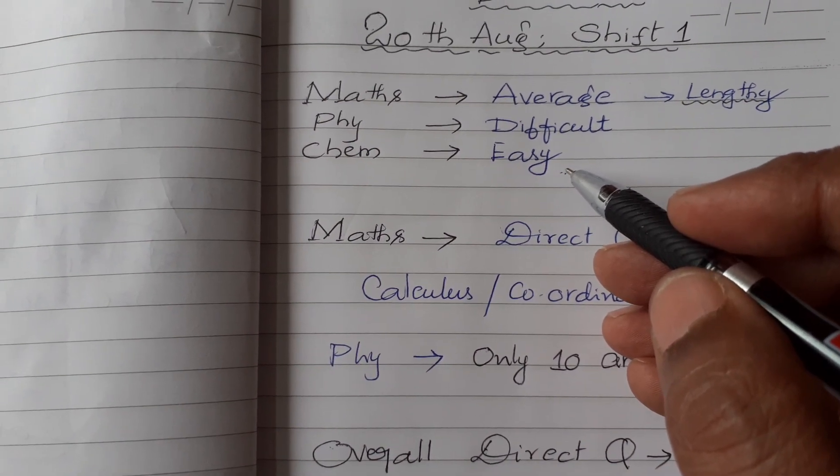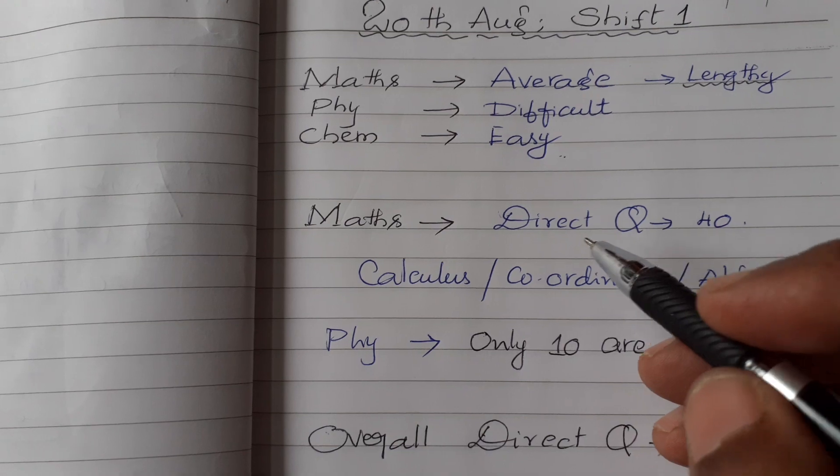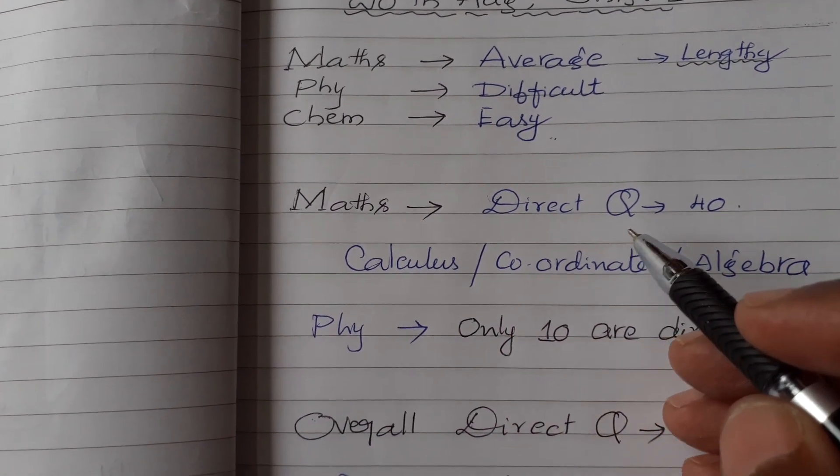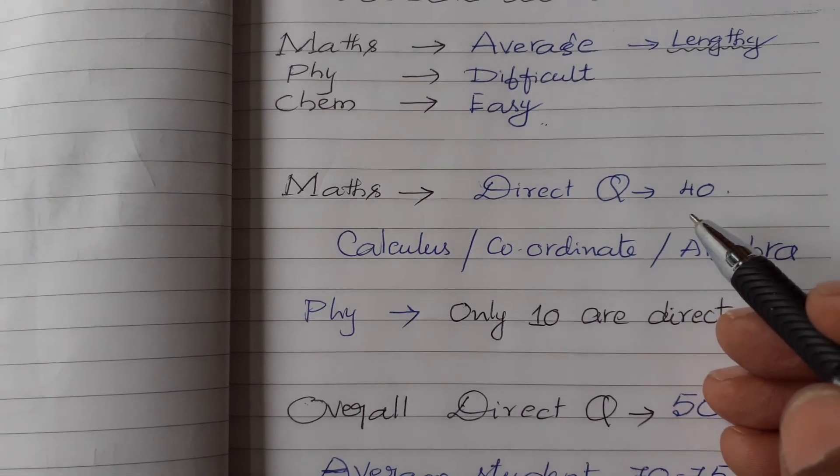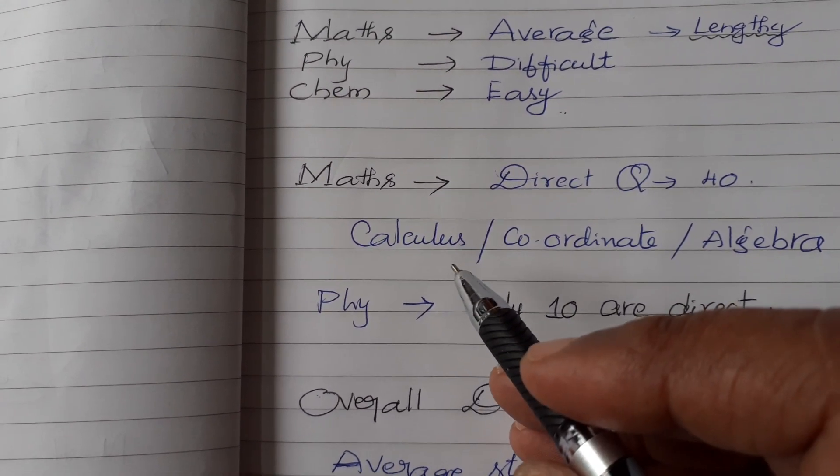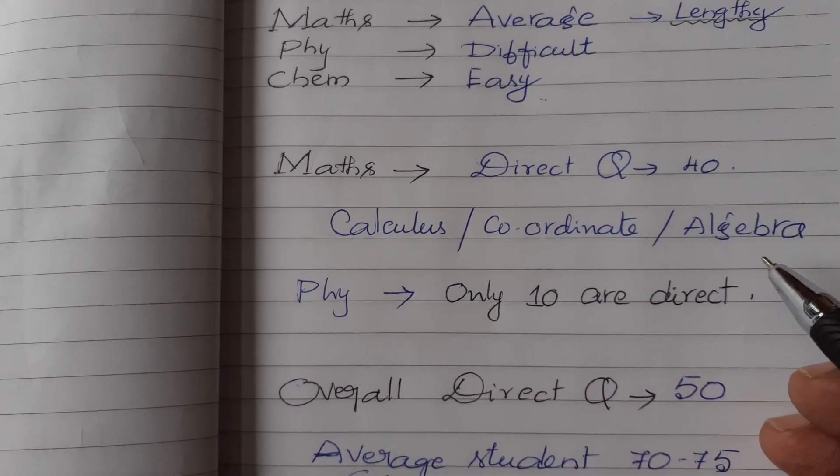Easy questions are given in chemistry. So now coming to mathematics, once again, 40 out of 80, 40 direct questions are there. Most questions came from calculus, coordinate geometry and algebra.